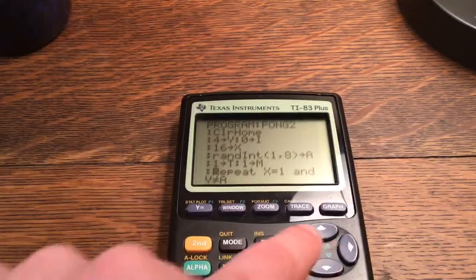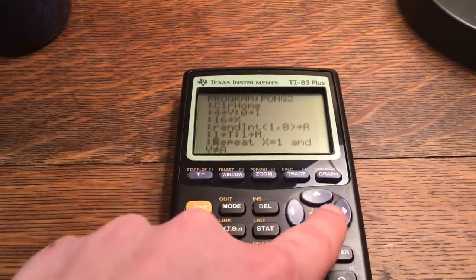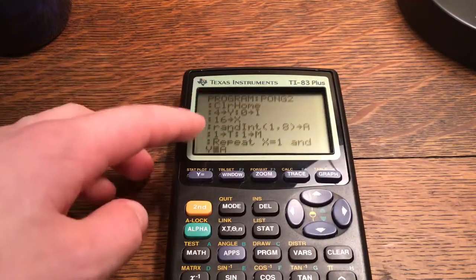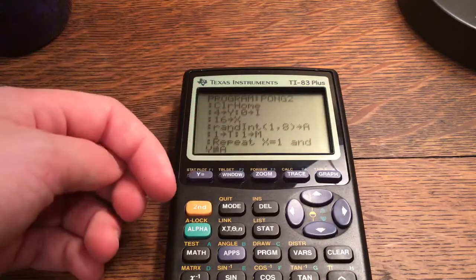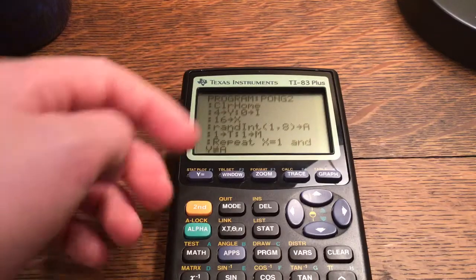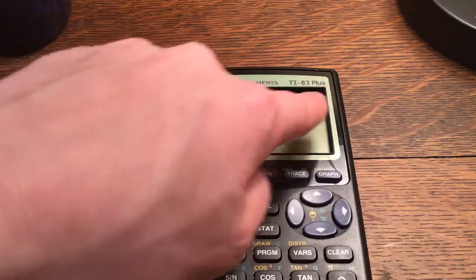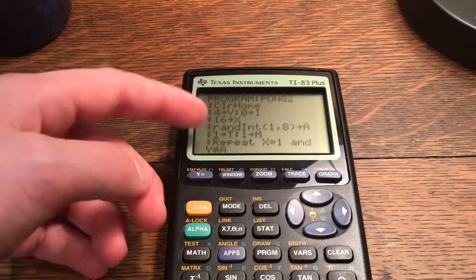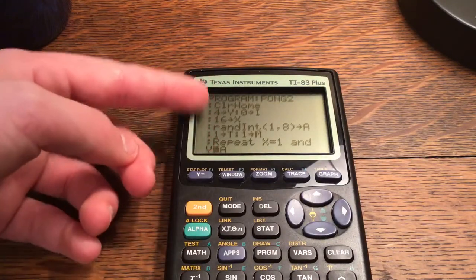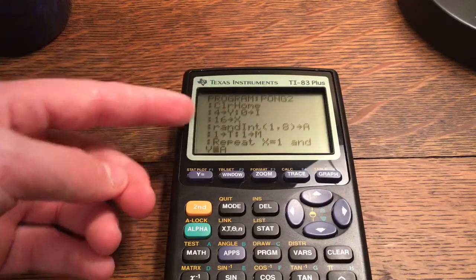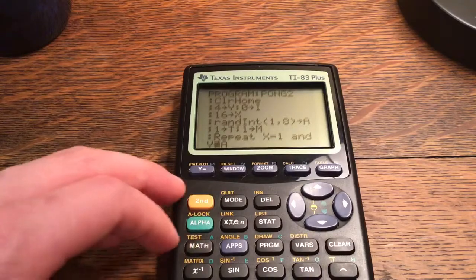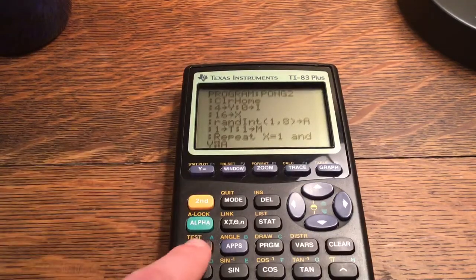Repeat X until X is equal to 1 and Y is not equal to A. So it's saying repeat this whole thing below it until the X, so the position on the screen this way is equal to 1, so that'd be this row here, and the position of the paddle is not equal to the Y position of the ball. To get the equal sign and stuff, it's second math or test.